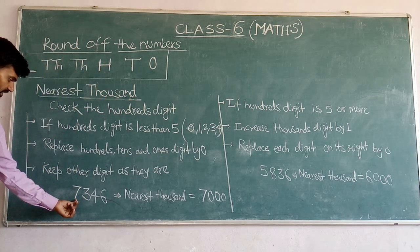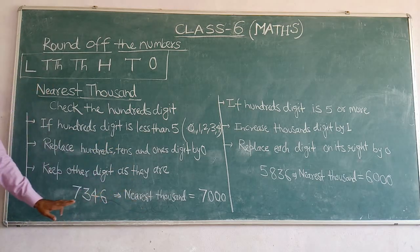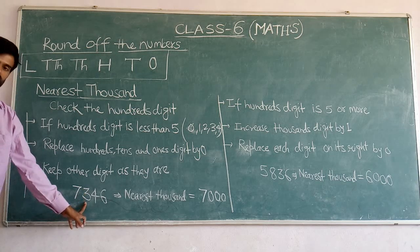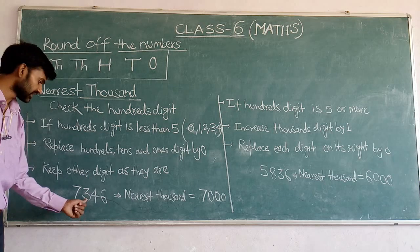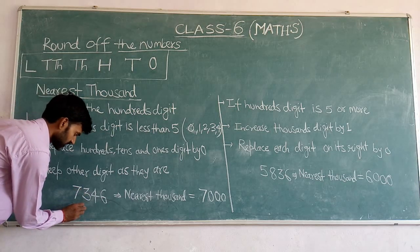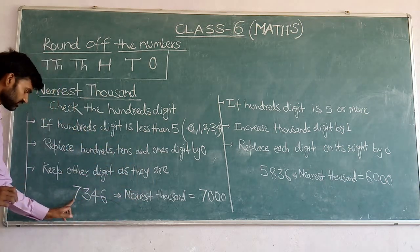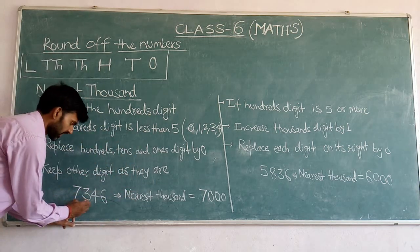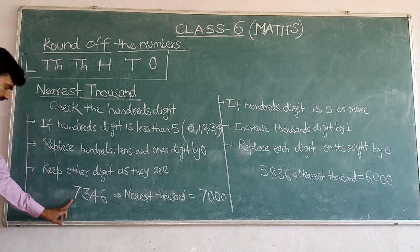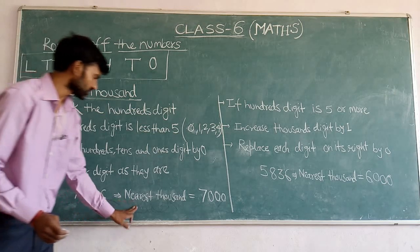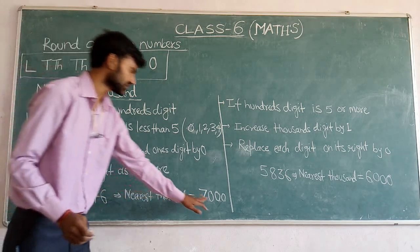For example, the number 7346. We have to find the nearest 1000. Before the thousands place is the hundreds place. Check the hundreds digit — it is 3, which is less than 5. So replace all the digits before the thousands place by 0 and keep the thousands digit unchanged. So the nearest 1000 of 7346 is 7000.